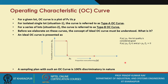What is an operating characteristic curve, or OC curve? For a given lot, the OC curve is a plot of probability of acceptance versus P, where P is the incoming lot quality. When dealing with attributes data, incoming lot quality is measured with proportion non-conforming. For an isolated single lot — situation 1 — the curve is referred to as a Type A OC curve. When dealing with a series of lots — situation 2 — the curve is referred to as a Type B OC curve.